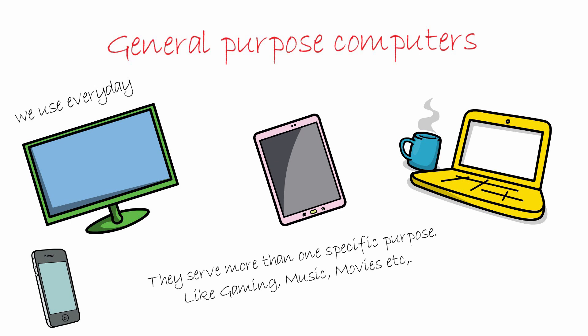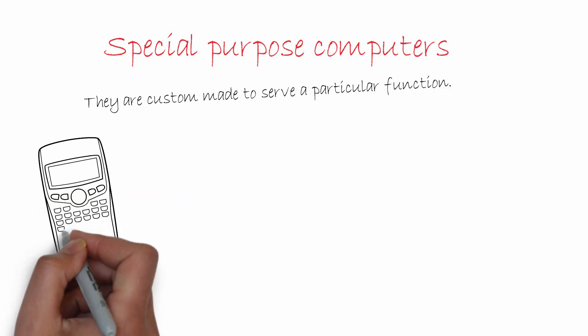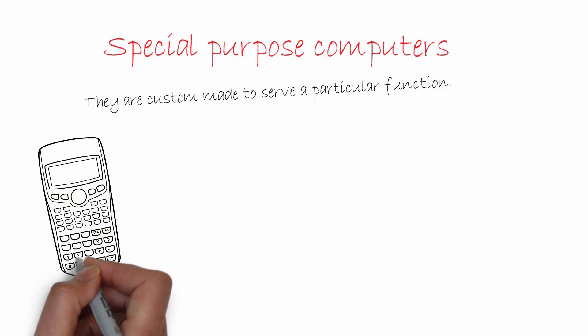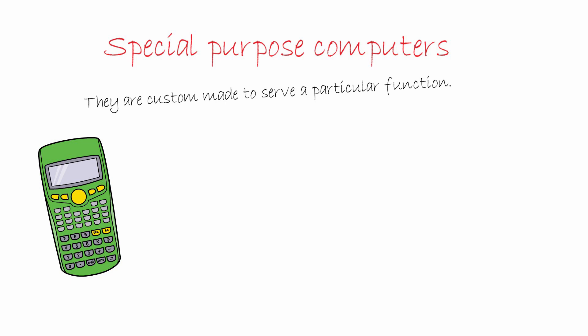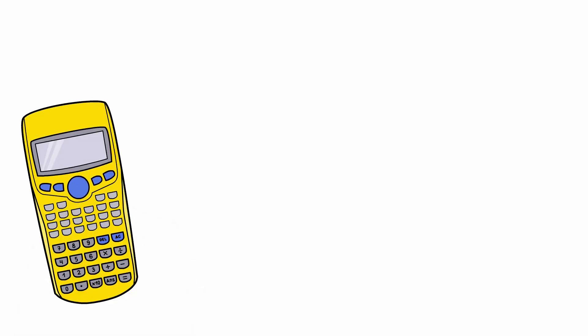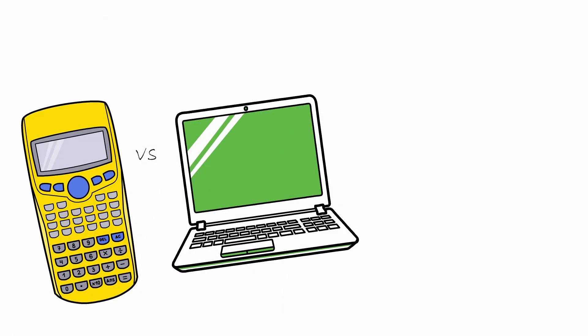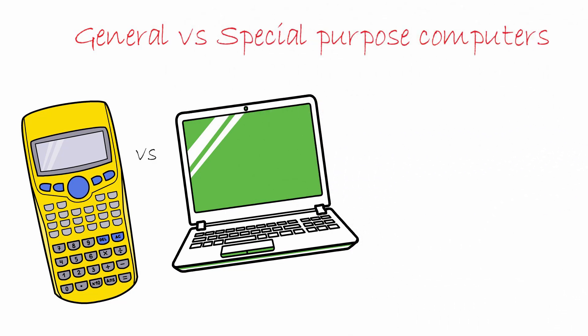Now that we have seen what general-purpose computers are, let's get back to special-purpose ones. Special-purpose computers are very specific to serve a particular function. A popular example is a calculator — its one and only job is to do calculations. Now the question is: what is the need of a calculator when we have a computer? What is the point of having a special-purpose computer when we have general-purpose ones?